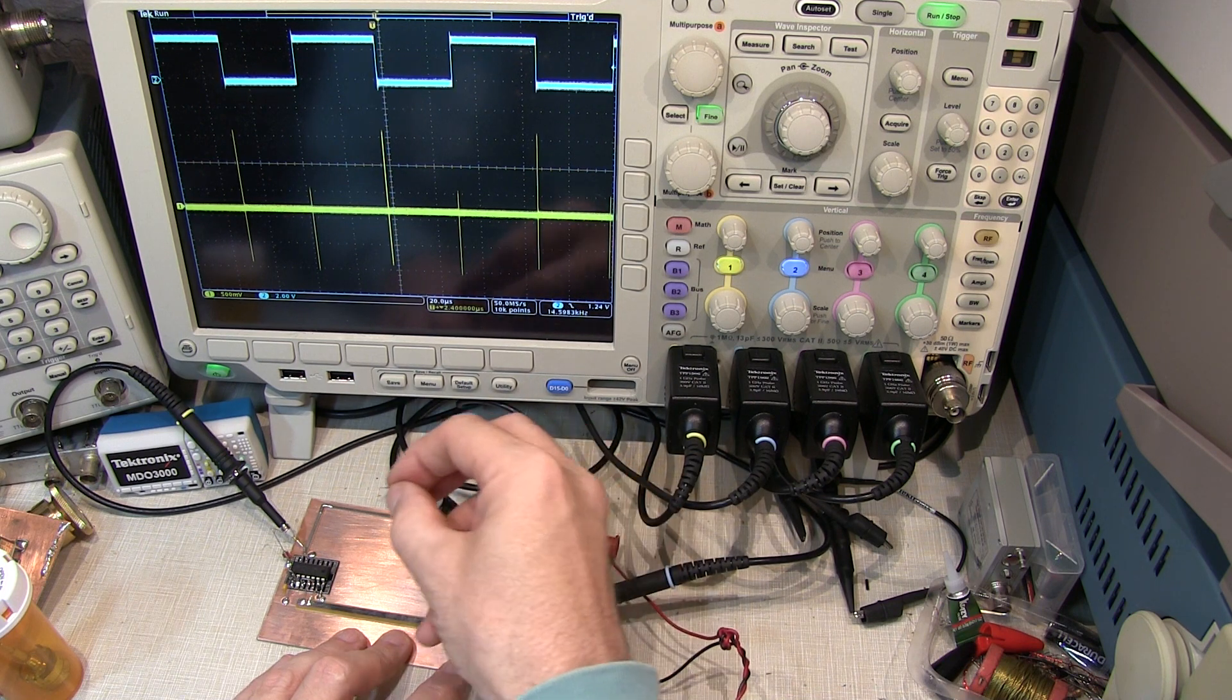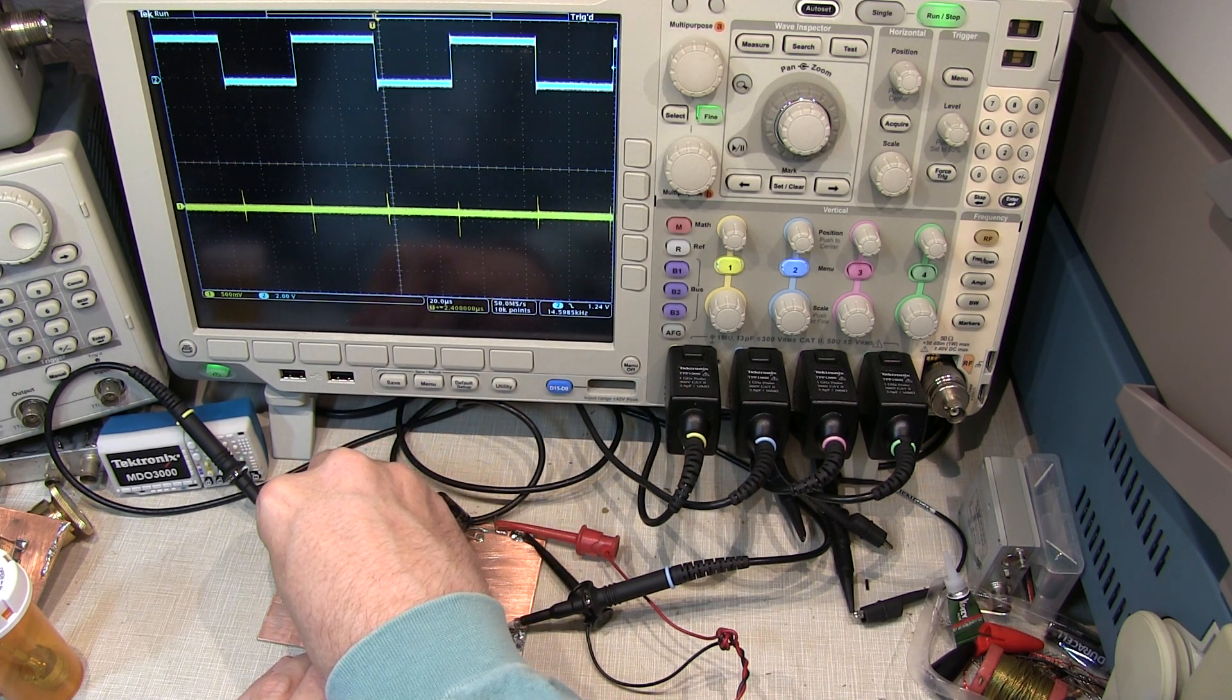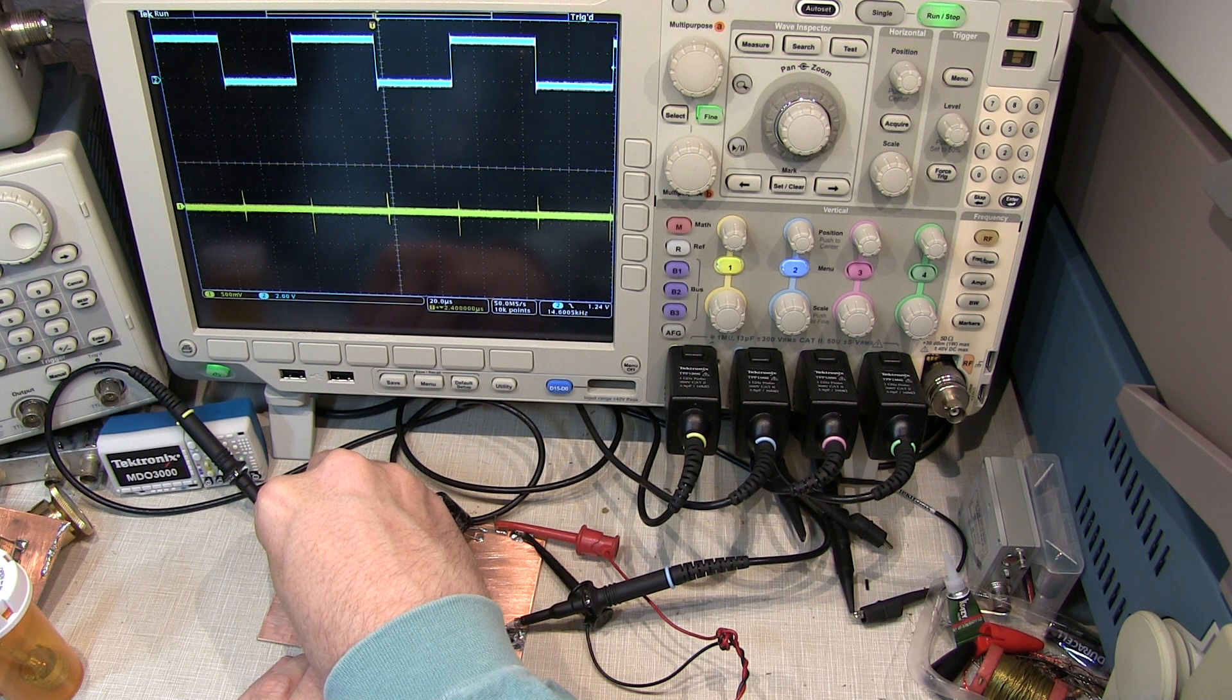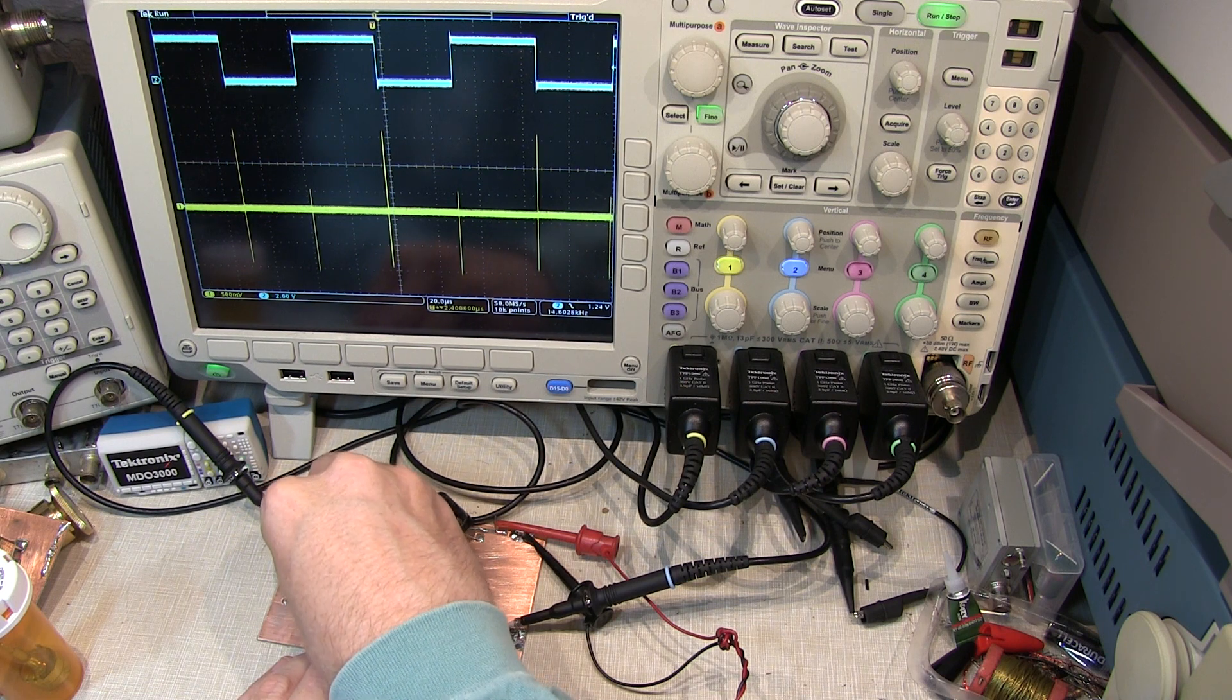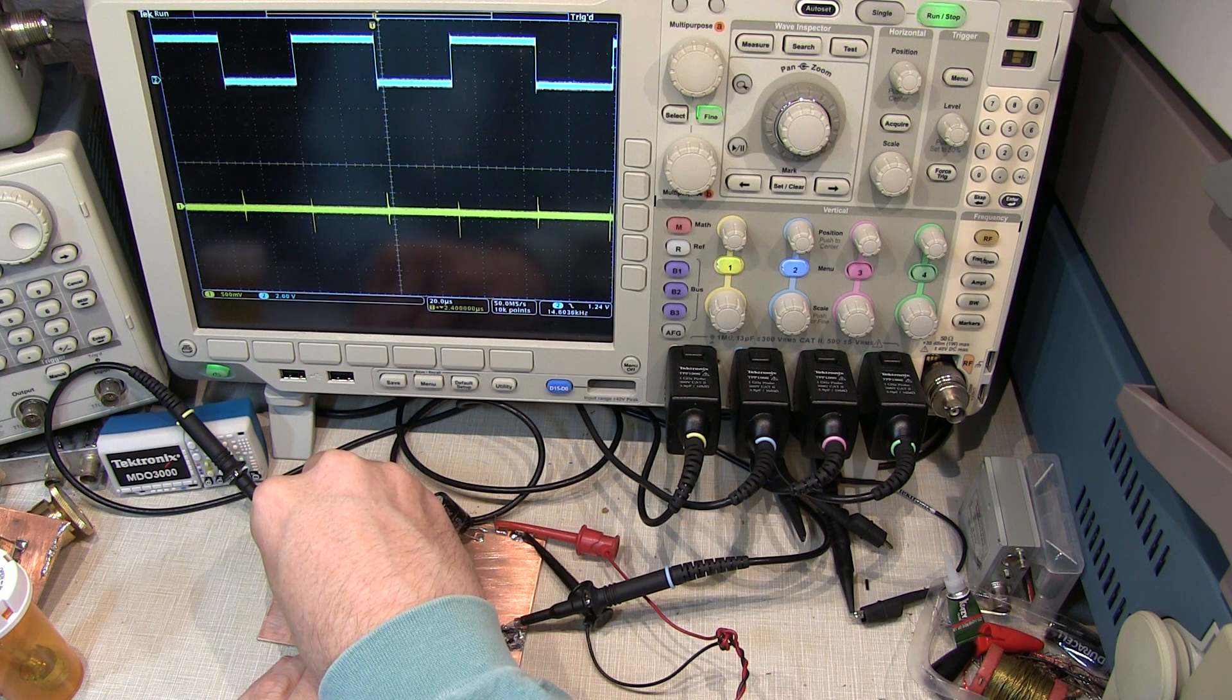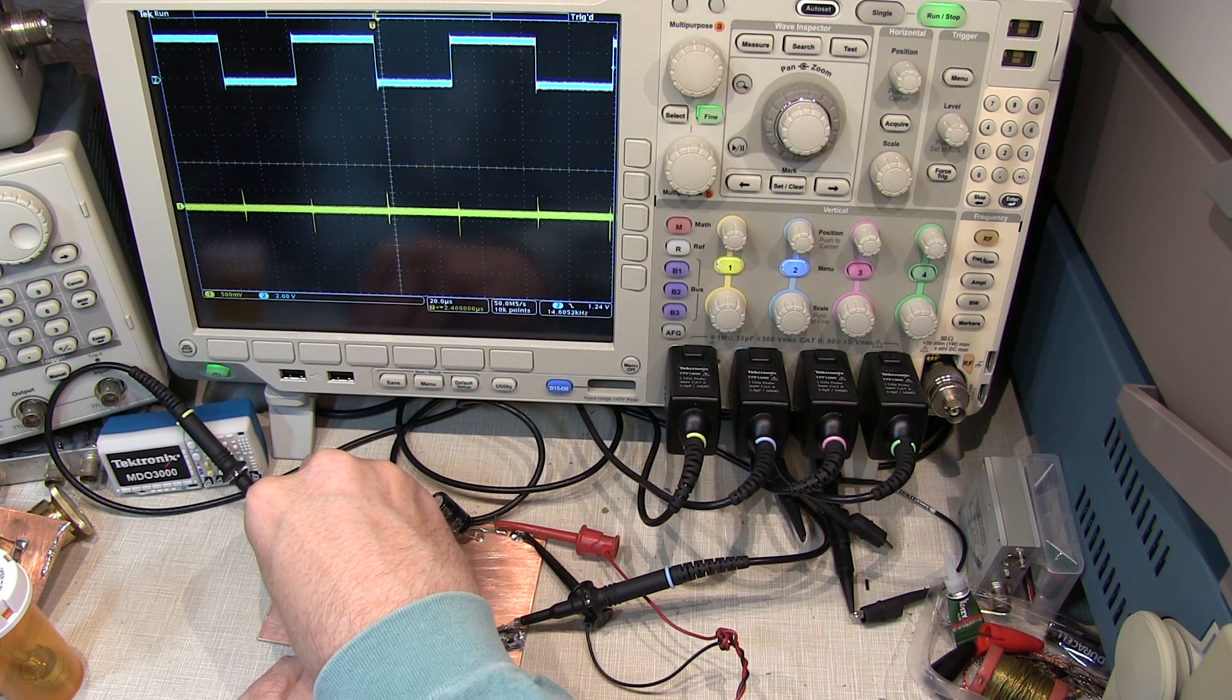But now let's place that same capacitor very close to the chip. And we can see a very dramatic change in that high frequency noise. And this is essentially why we've got these capacitors located very, very close to the devices to get rid of that high frequency noise locally.